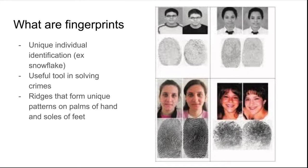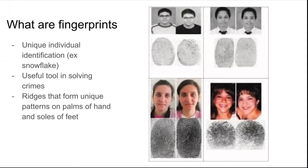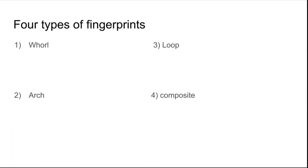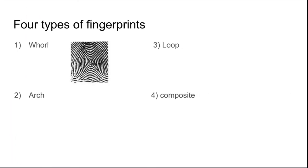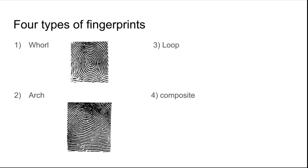Fingerprints are ridges, or papillary ridges, that form unique patterns on the palms of your hands and soles of your feet. There are four main types. A whorl, which is one central circle that must at least make one complete turn. An arch, like a wave — the two sides meet in the middle where they spike up like a wave.